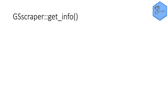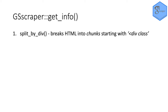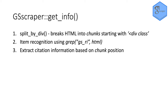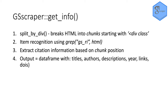The next function gets information out of those HTMLs. It uses a sub-function called splitByDiv which breaks the HTML into chunks of code each starting with 'div space class'. It then uses regular expressions to extract each set of search results in a single chunk from within an HTML file, and extracts specific citation information based on the position of the sub-chunk within each major result chunk — we know its position because Google Scholar is consistent. The output is a data frame where each line is a search result and each column is a title, author, description, year, link, or DOI.